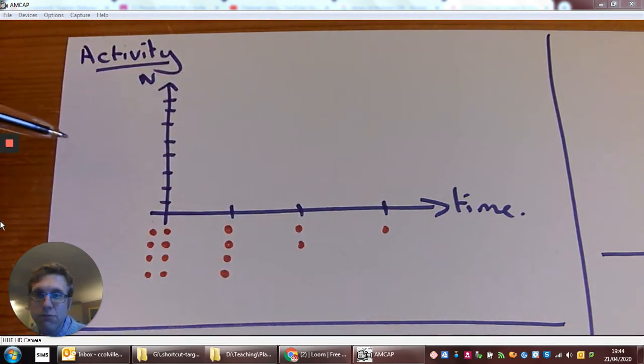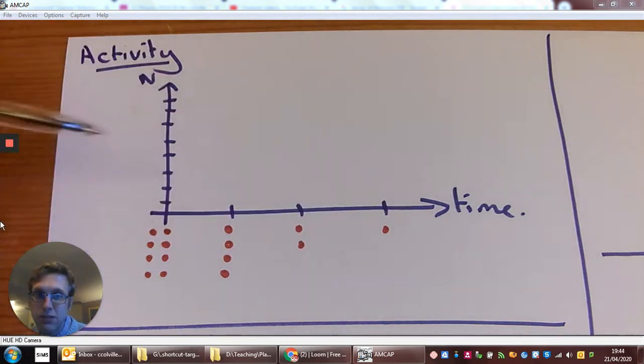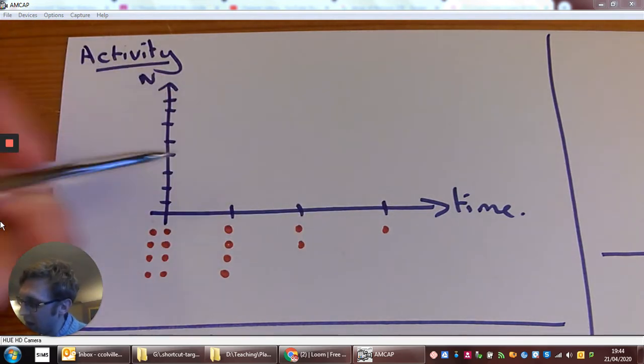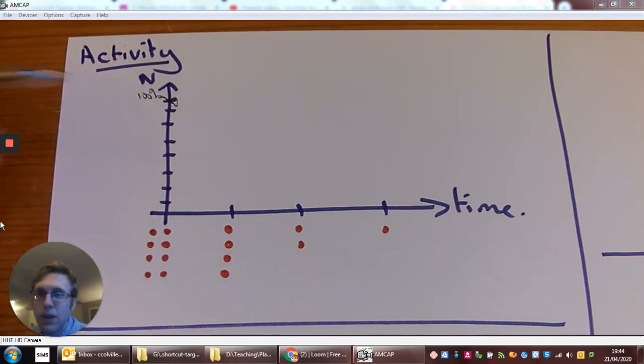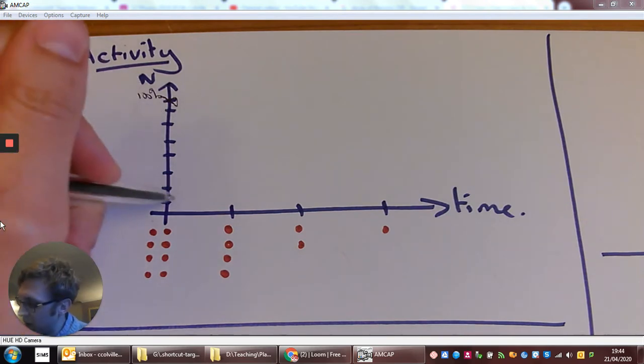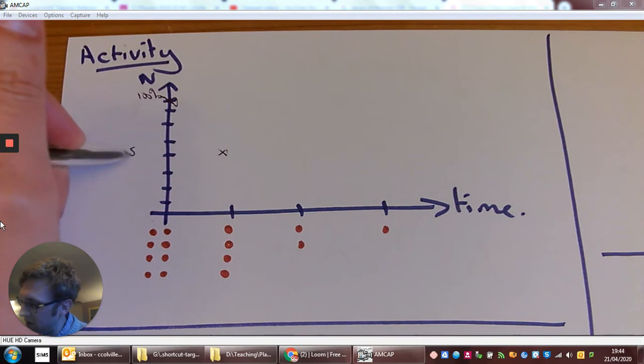So this is our classic kind of rate graph. We've got the number of radioactive particles on our y-axis and time across the x, and I've got 100% of my sample here at the start. Our definition of half-life is the amount of time it takes for half of these radioactive particles to decay. So after one half-life, half will be decayed, so I'm down to 50%.